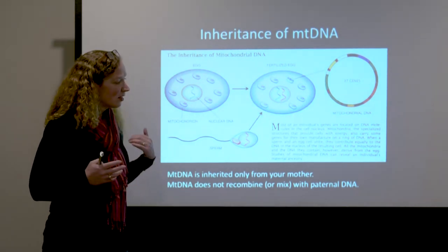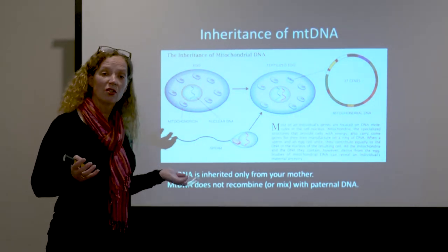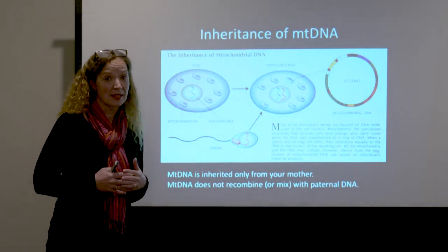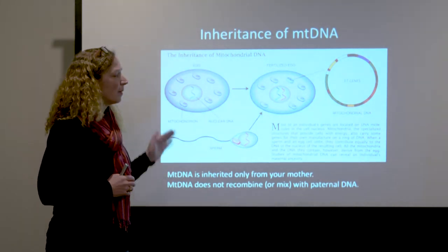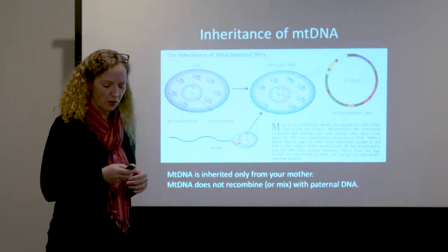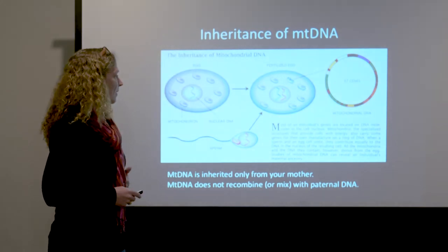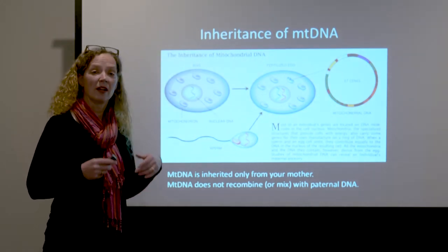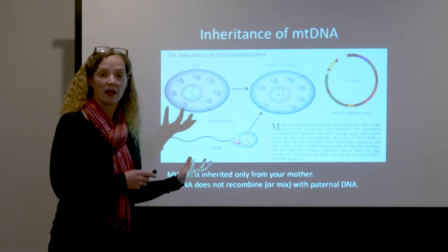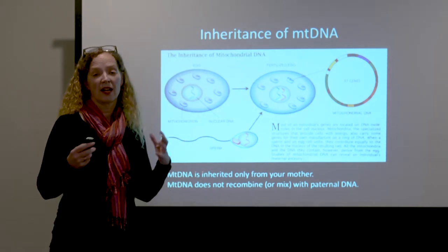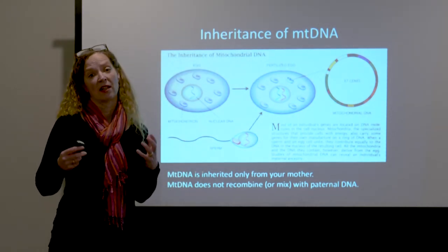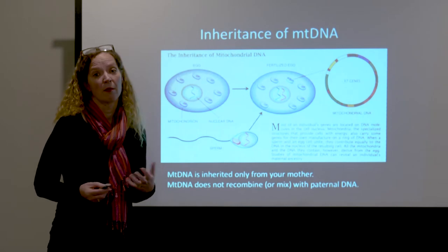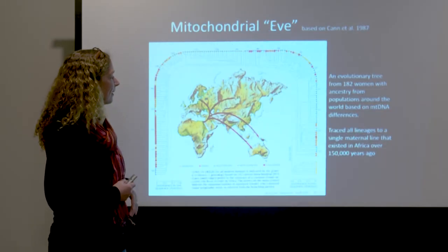Mitochondrial DNA is a circular genome, about 16,500 bases long in humans, and it codes for 37 genes. So we can talk about mitochondrial DNA versus nuclear DNA — the DNA bound up in chromosomes that you inherit from both of your parents.